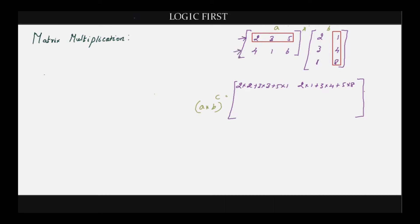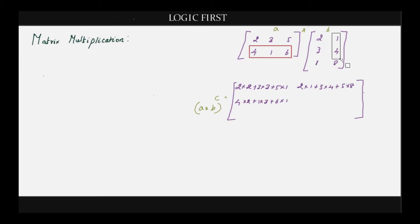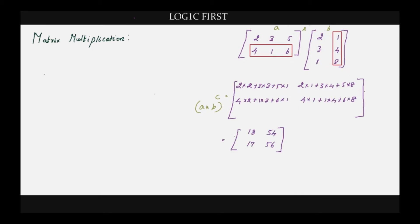Now we are done with the first row and we have to move to the second row. Multiply the second row with the first column: 4×2 plus 1×3 plus 6×1, and then move to the second column. So this is the resultant matrix.